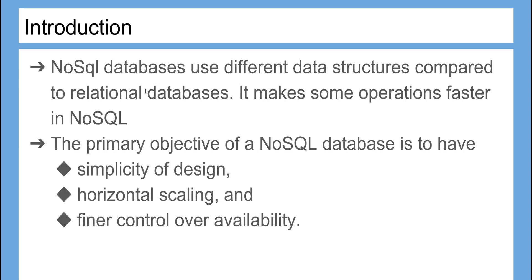NoSQL databases use different data structures compared to relational databases, which makes some operations faster in NoSQL. The primary objective of a NoSQL database is to have simplicity of design, horizontal scaling, and finer control over availability.